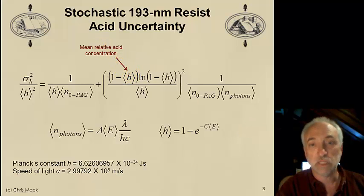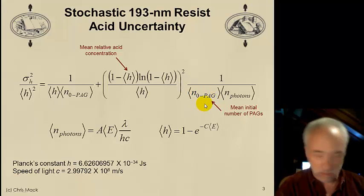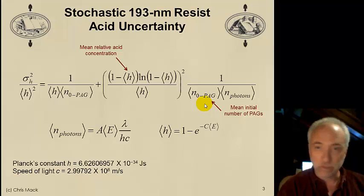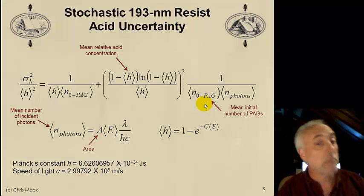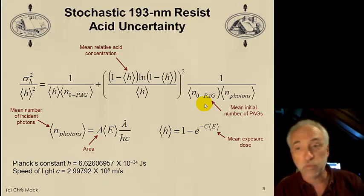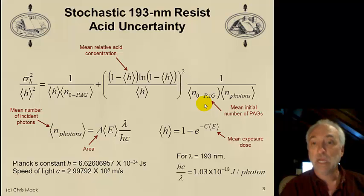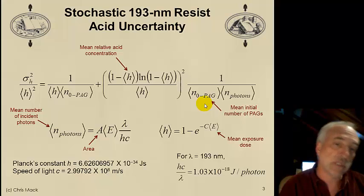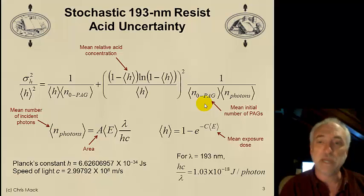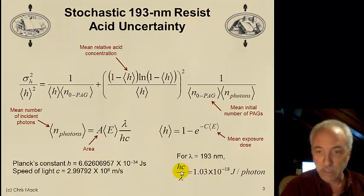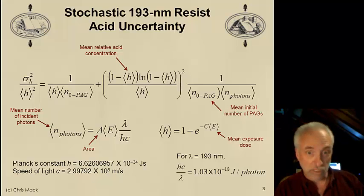The relative variance is a function of the mean relative acid concentration and the mean initial number of PAGs in that volume — determined by the photoresist concentration. We also have the mean number of incident photons on some area A, which comes from the mean exposure dose multiplied by λ/hc, where hc/λ is the energy of one photon — Planck's constant h times the speed of light c divided by wavelength λ. At 193 nanometer light, the energy of one photon works out to about 5 electron volts per photon.